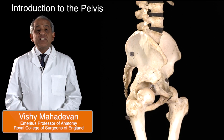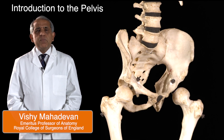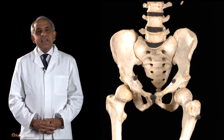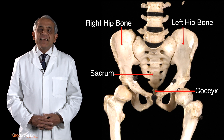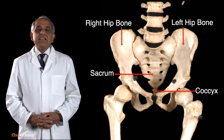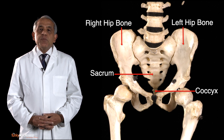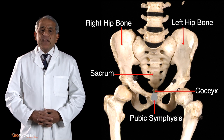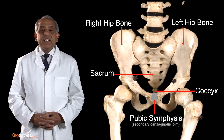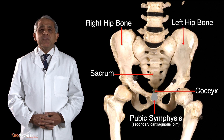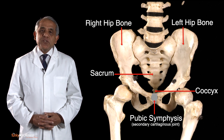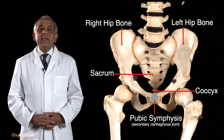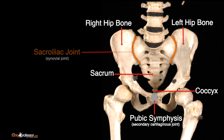The bony pelvis refers to the irregular but nevertheless complete bony ring made up of the sacrococcygeal part of the vertebral column posteriorly and the two hip bones at the sides and in front. The two hip bones are joined to each other anteriorly at the pubic symphysis, which is a very strong union and is a secondary cartilaginous joint — in fact, the finest example of a secondary cartilaginous joint in the body. Posterolaterally, each hip bone articulates with its side of the sacrum at the sacroiliac joint, which is a synovial joint.